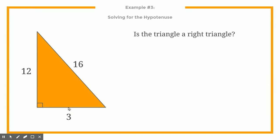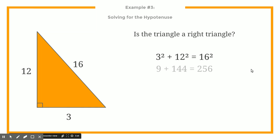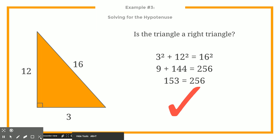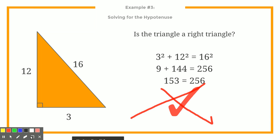Let's look at another one. Is this a right triangle? We plug the numbers into our formula: 3 goes where A is, 12 goes where B is, and 16 — being the longest side — is our hypotenuse on the right side. Then we evaluate: find 3 squared, 12 squared, and 16 squared. Add up the left side and check if it matches the right side. In this case it doesn't — 153 is not the same as 256. So this does not create a right triangle because the two sides do not match.